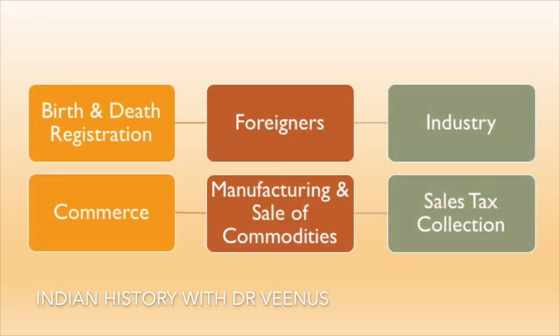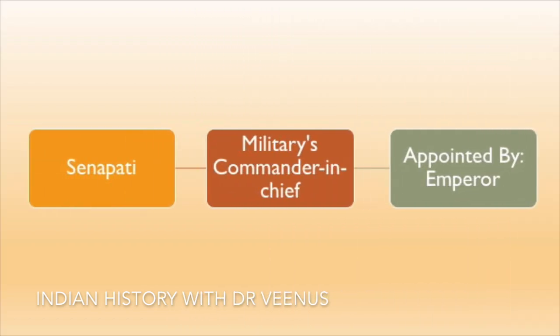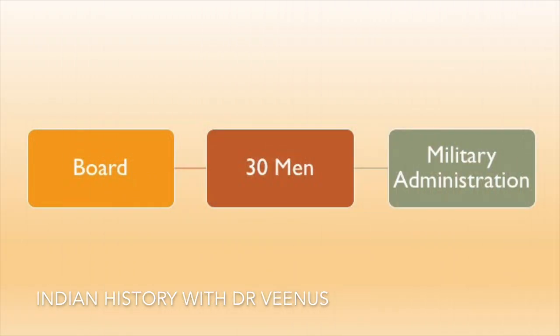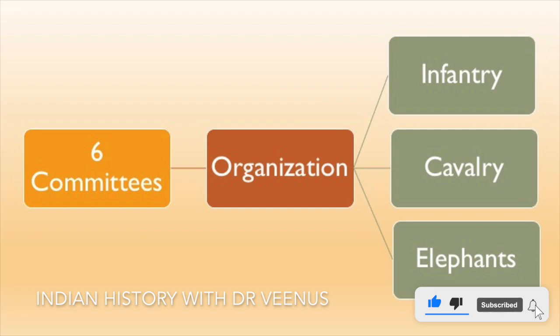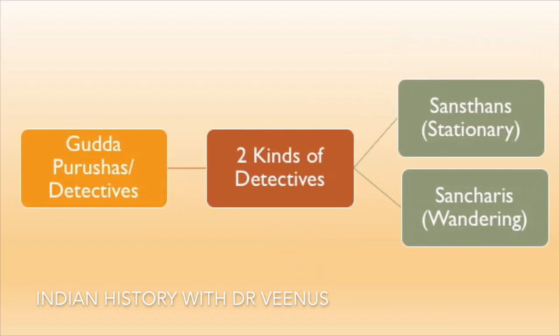The administration was in charge of birth and death registration, foreigners, industry, commerce, manufacturing and sales commodities, and sales collection. The Senapati, known as the right hand of the emperor, was the military's commander-in-chief, appointed by the emperor. The army was paid in cash. A board of 30 men oversaw military administration, organized into six committees: infantry, cavalry, elephants, chariots, navy, and transport.